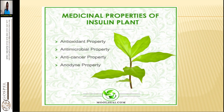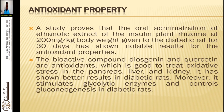Insulin plants have antioxidant, antimicrobial, anticancer, and anodine properties. What we need to know is how to extract it so that it becomes powerful. Our challenge has been to come up with procedures of extracting and concentrating it so that it works as fast as over-the-counter drugs. It has antioxidant properties.